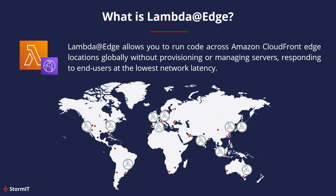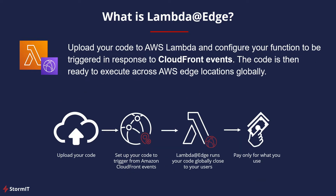So what is Lambda at Edge? Basically, it allows you to run code across CloudFront Edge locations globally without provisioning or managing servers, responding to end users at the lowest network latency. You just upload your code to AWS Lambda and configure your function to be triggered in response to CloudFront events. The code is then ready to execute across AWS Edge locations globally. Essentially, you have to use CloudFront CDN — if you are using anything else, you are not able to use AWS Lambda at Edge.